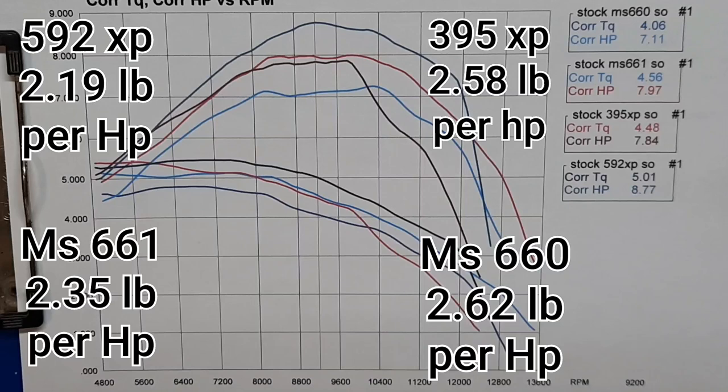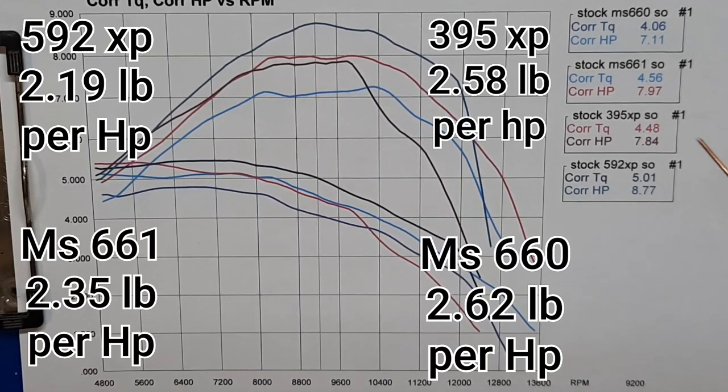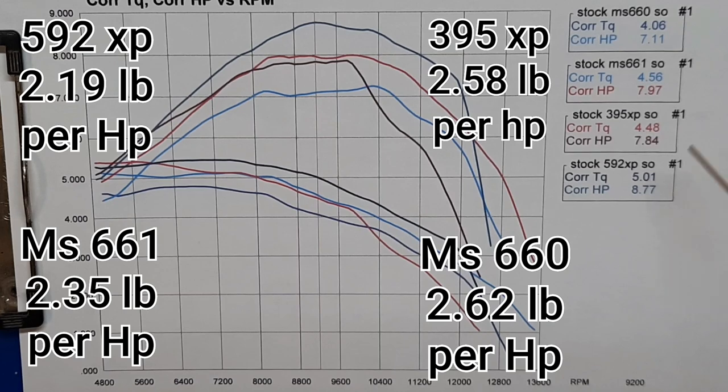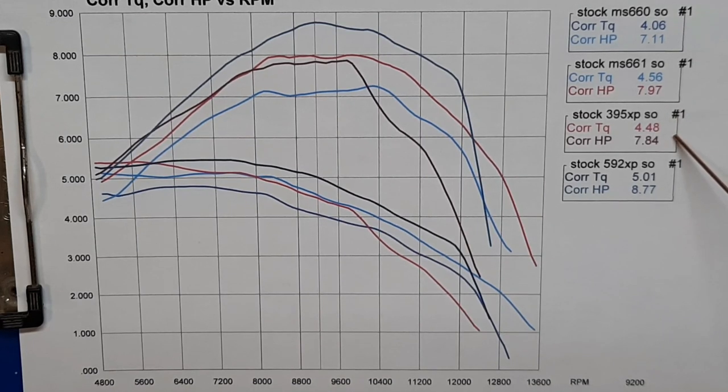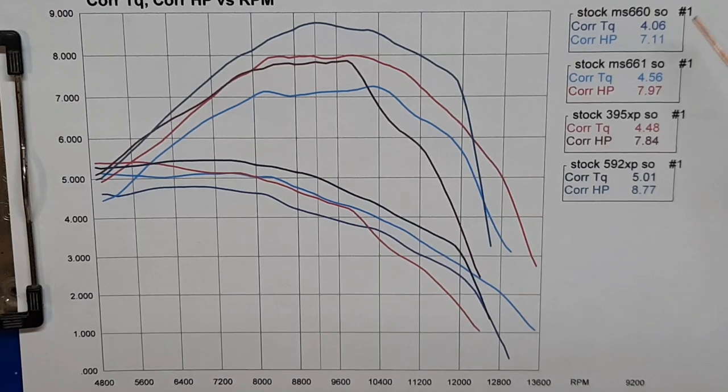Well looks like the 592 did come out on top right here, 8.77 horsepower, then the 661 at 7.97, then the 395 at 7.84, then the 660 at 7.11. All of these power numbers right here in these boxes are taken at 9200, right here, this real thin red line.